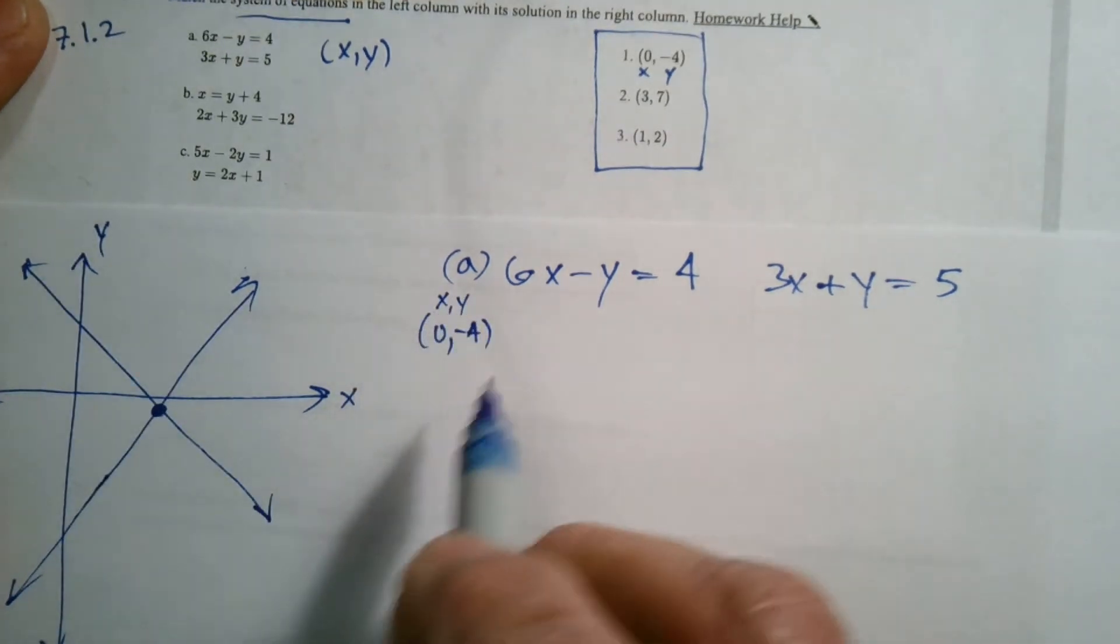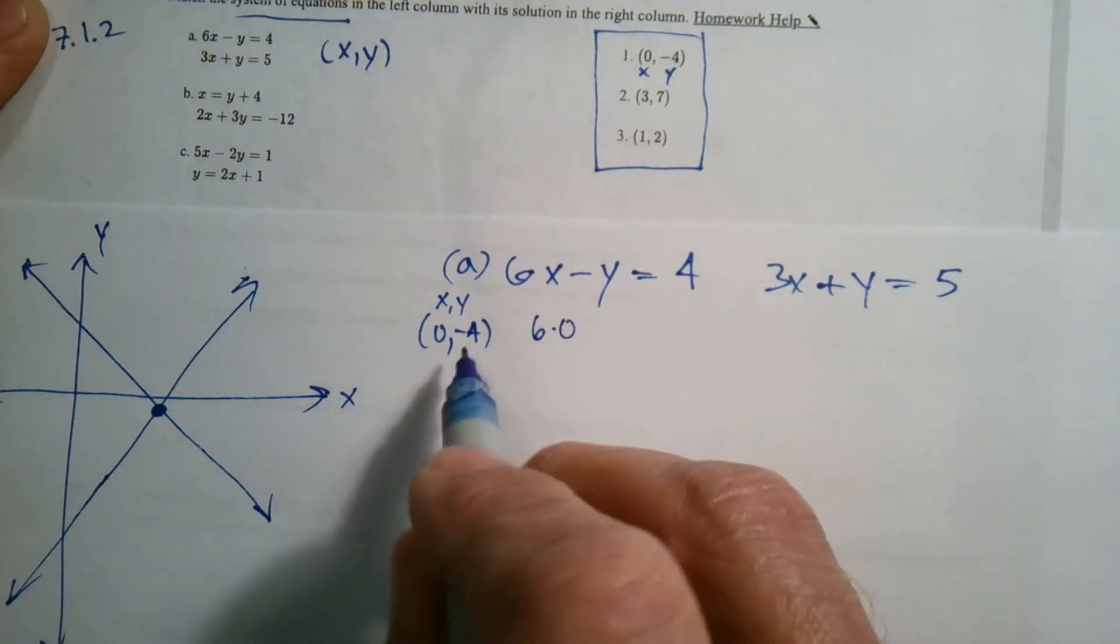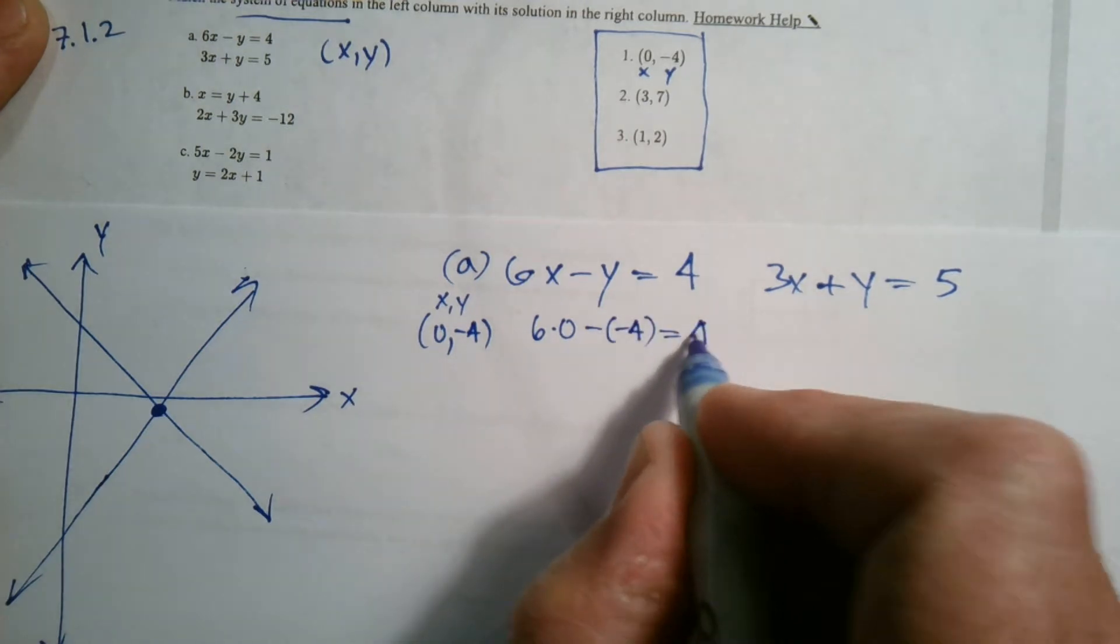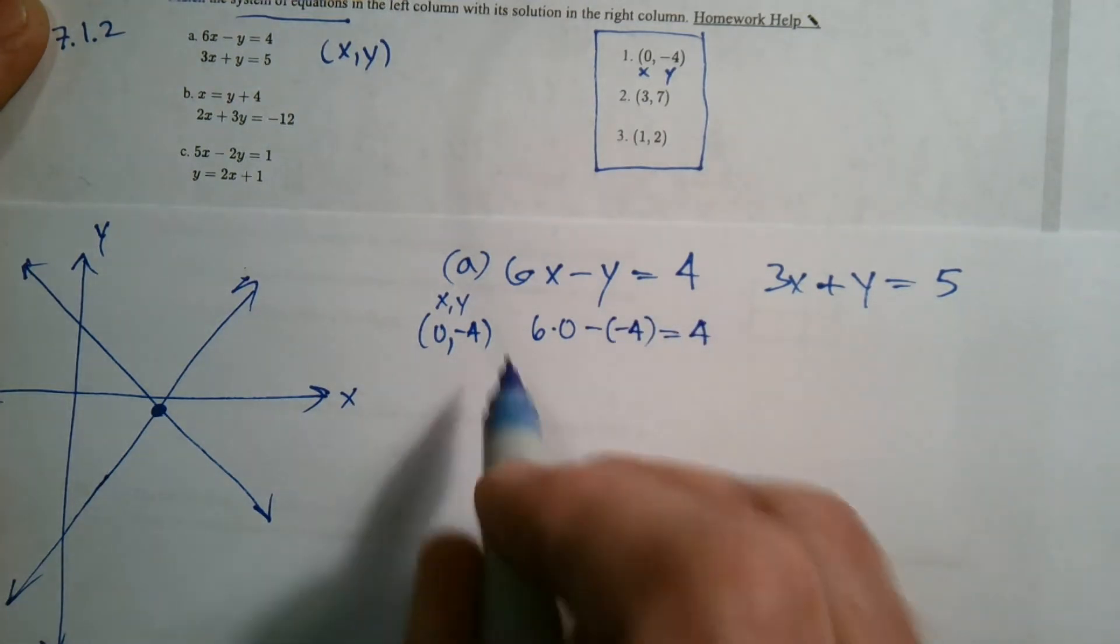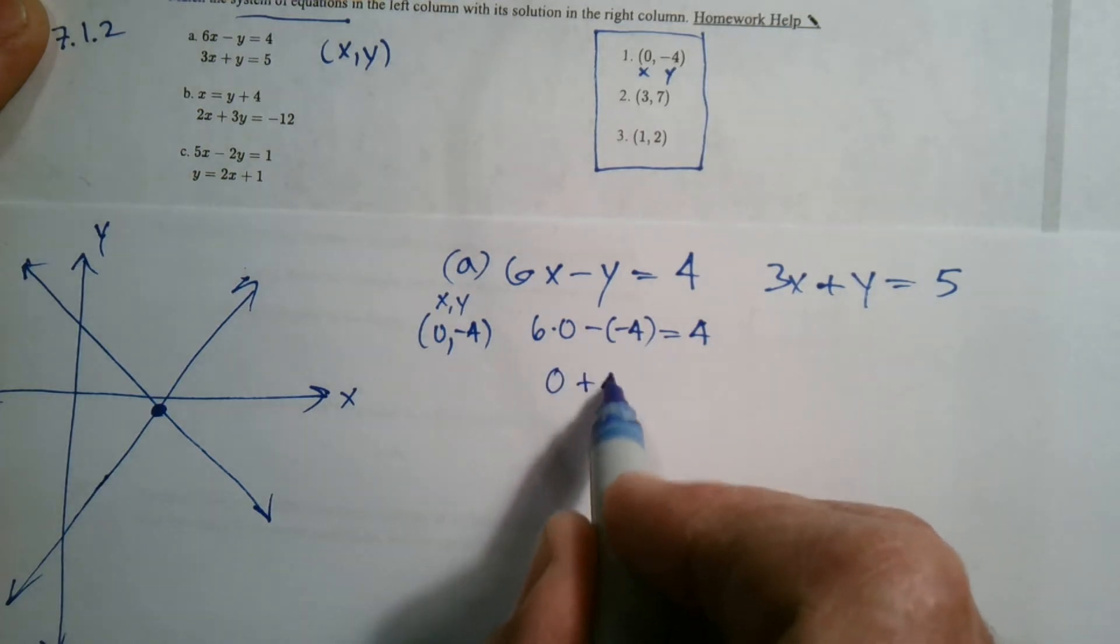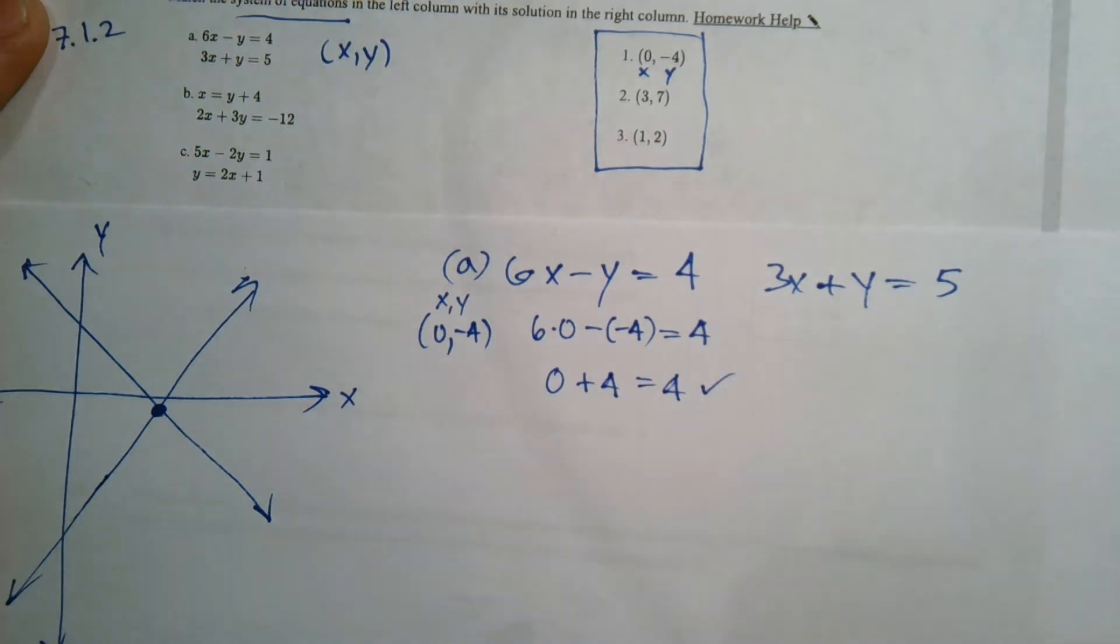Remember, it's x comma y. So I'm going to put that 0 into that x there. So 6 times 0 and negative 4 into the y minus negative 4. Does that equal 4? That's what I need to figure out. So 6 times 0 is 0. 0 minus a negative really becomes plus 4. Add the opposite. So sure enough, yeah, that's true. 0 plus 4 does equal 4.